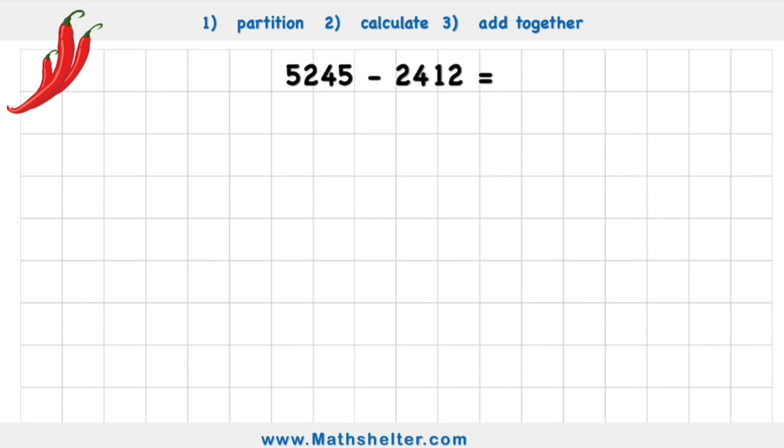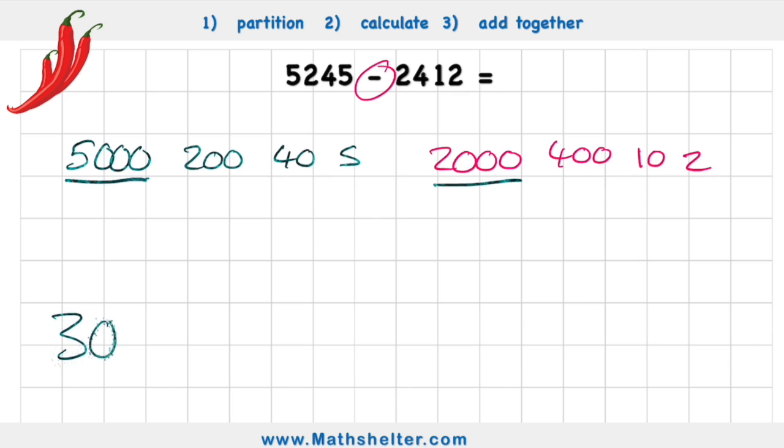Let's look at a red chili challenge, which I'm just going to do this nice and quickly. 5,245 becomes 5,245. And 2,412 becomes 2,410. There we go. And this question is subtraction. So I'm just going to simply get my 5,000 and subtract 2,000. That leaves me with 3,000.